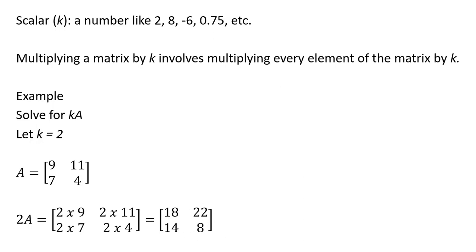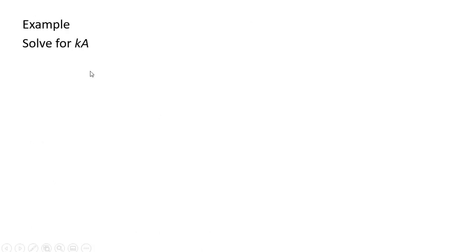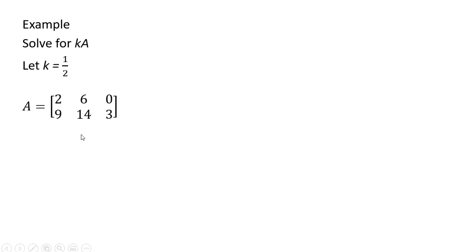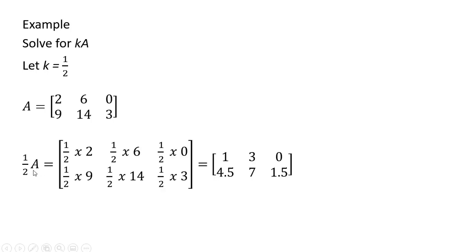Let's do another example. This time we'll let the scalar equal 1 half. I'm going to multiply every element of matrix A — this time it's a 2 by 3 matrix — by 1 half. So 1 half times 2, 1 half times 6, 1 half times 0, 1 half times 9, 1 half times 14, and then 1 half times 3.